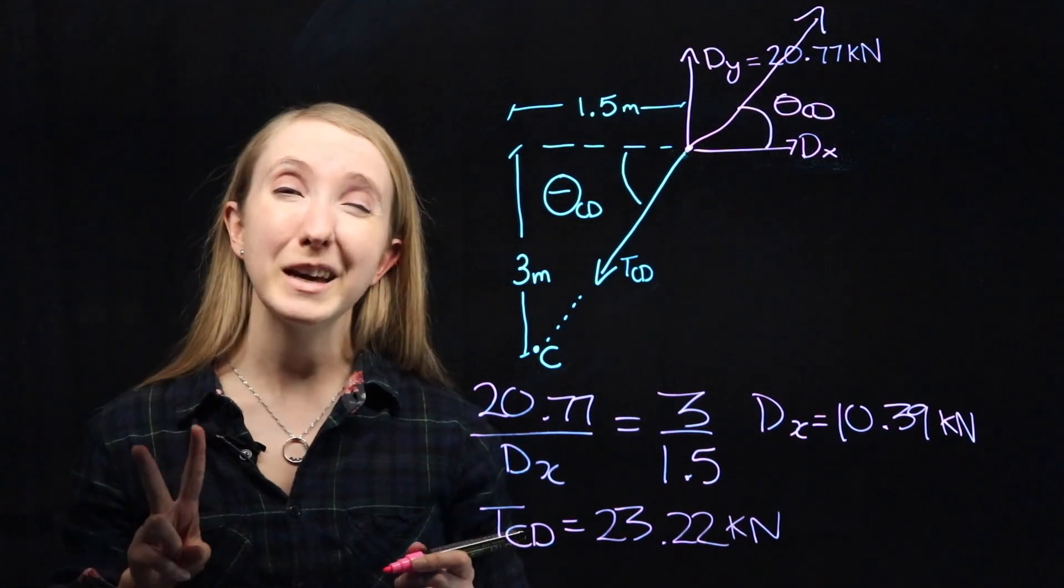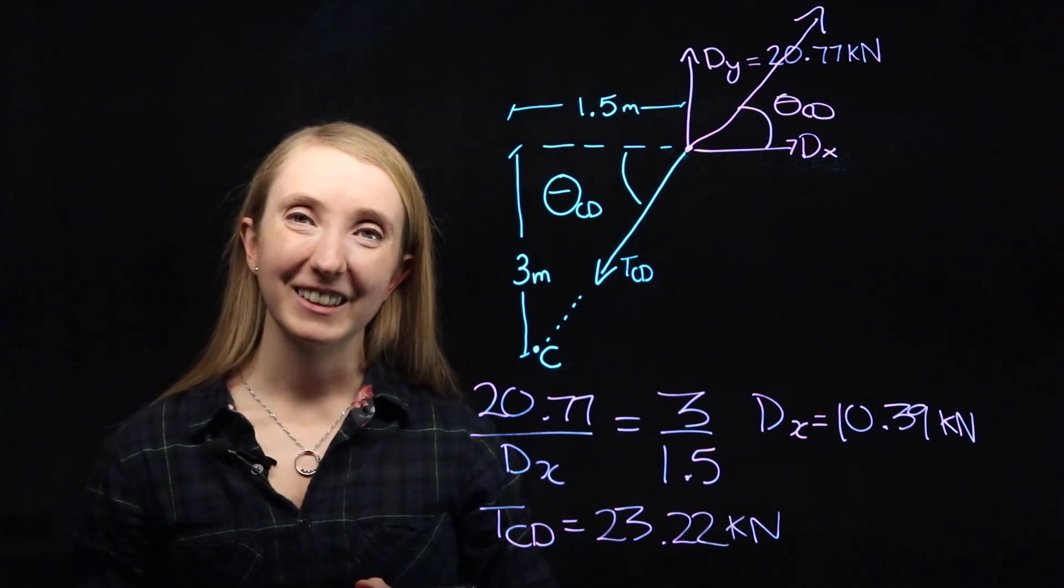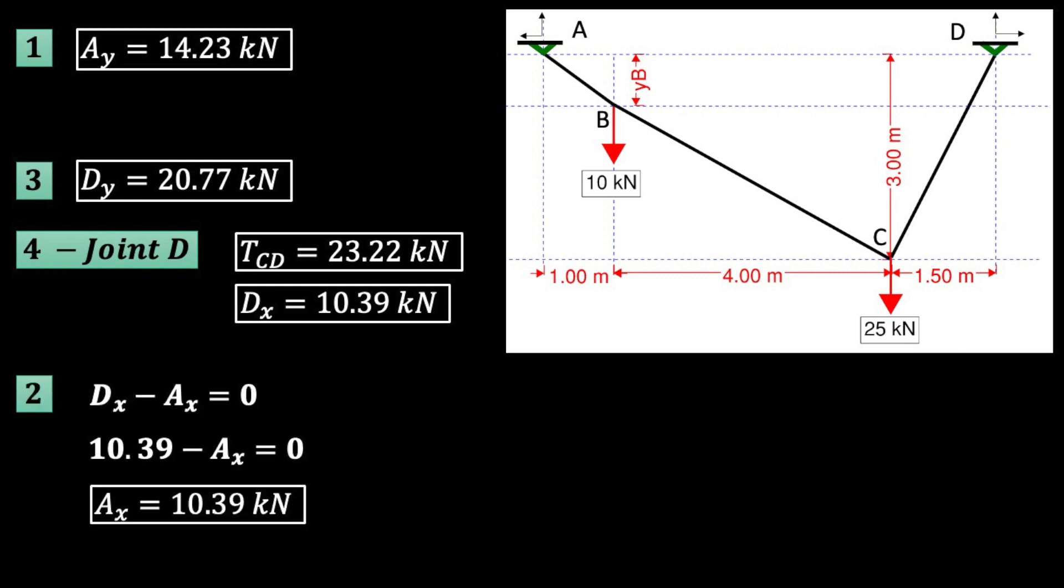Now that we've solved joint d twice, let's take a step back and look at the big picture again. This is everything we've done so far. With the dx we just solved for, we can go back to equation 2 and solve for Ax. Plugging in our value for dx shows us that Ax has the same value in the opposite direction to match our free body diagram.